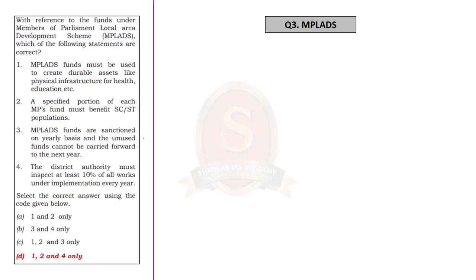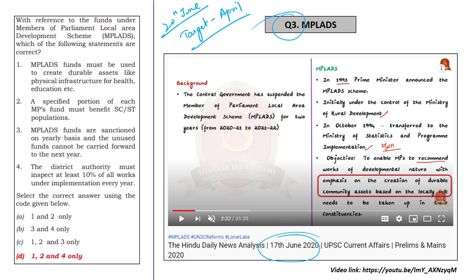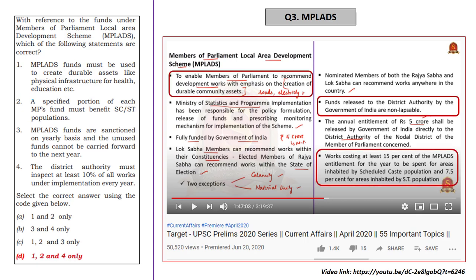Through this elimination of options, you can arrive at the correct answer, Option B — amending the constitution. Next, the third question is on the MPLAD scheme. We discussed this scheme on 17th June 2020 and 20th June 2020 in the News Analysis, and also in our Target 2020 Prelim Series for April 2020. During the 17th June analysis, we discussed clearly about the first two statements. In the Target Series, we mentioned that funds released under the scheme are non-lapsable — meaning unused funds do not lapse and can be carried forward to the next year. If you know this fact, you can easily say Statement 3 is incorrect, and eliminate options B and C, improving the probability of correctly answering to 50%.